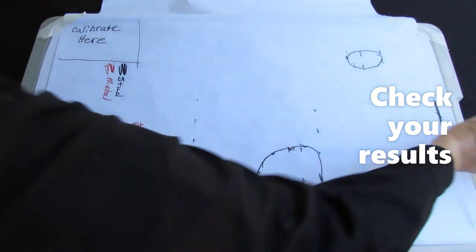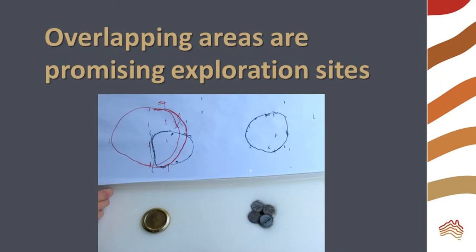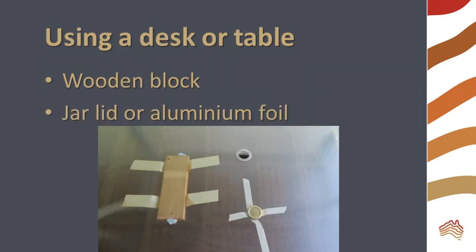Your stud finder should show a smaller number of metal areas. In real life, these would be the areas where magnetic and gravity surveys overlapped.